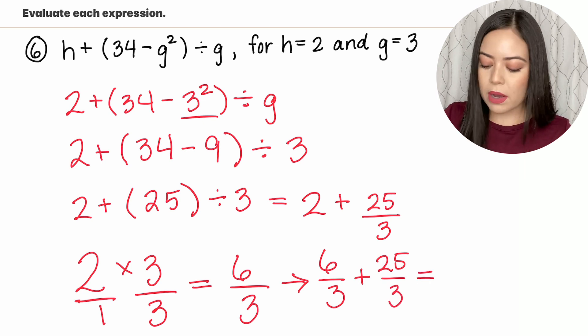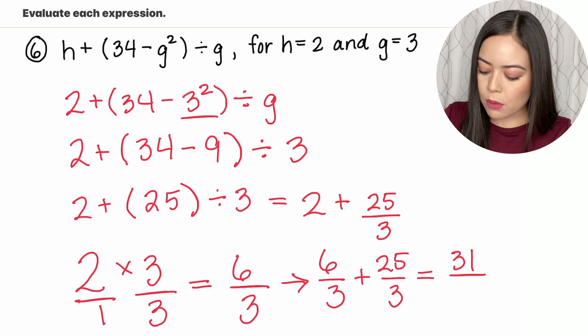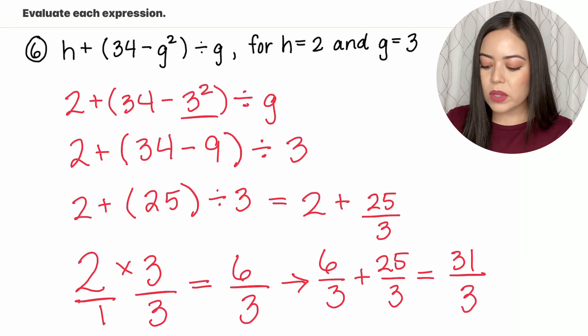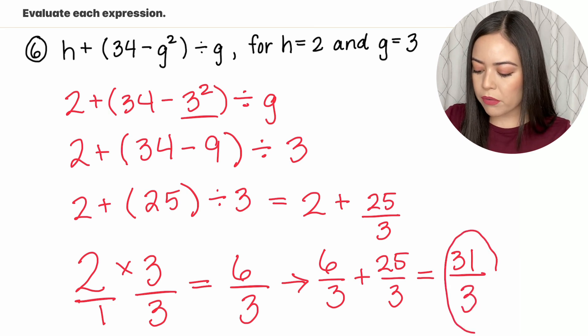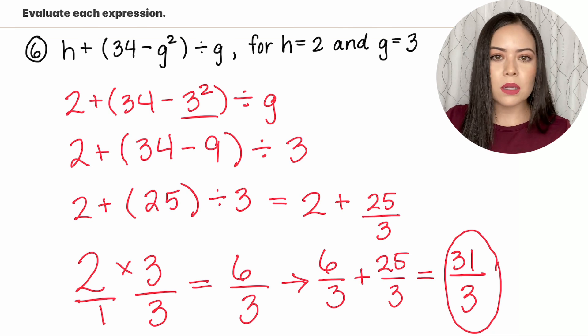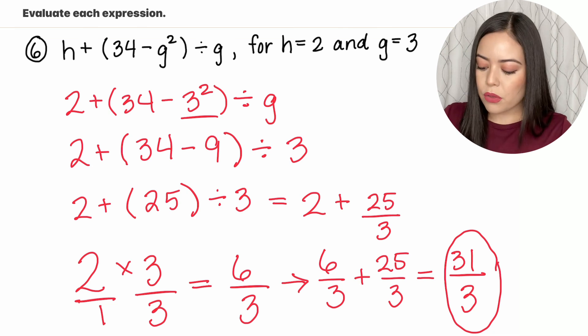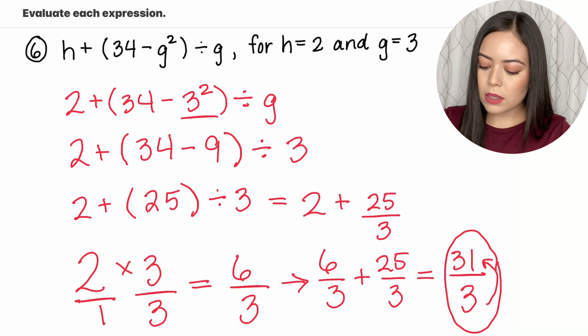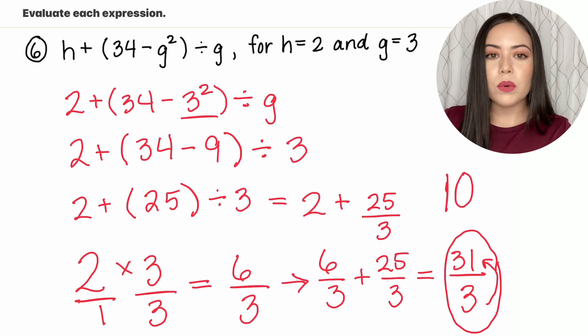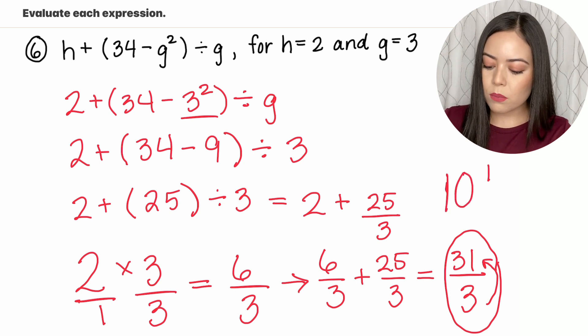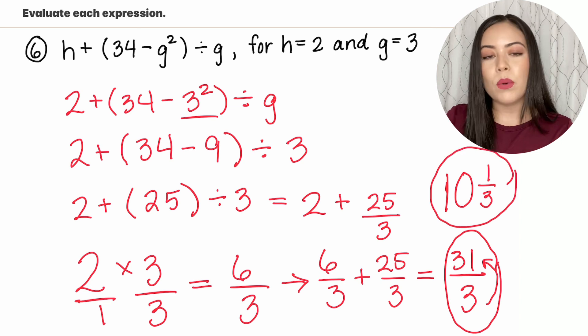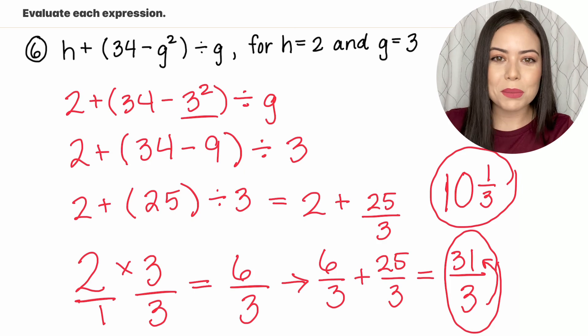6 plus 25 is 31 and we're going to keep the denominator as 3. So this is our answer as an improper fraction. If you want to turn it into a mixed number it's just division. So 3 goes into 31 ten times with a remainder of 1 and we keep the denominator. So we can also say our answer is 10 and 1 third if you wanted to turn it into a mixed number.